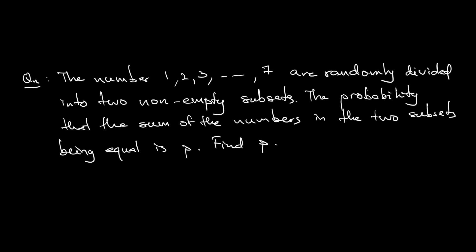This question is a combinatorics question. The numbers 1, 2, 3, all the way until 7 are randomly divided into two non-empty subsets. For example, the first subset is {1, 2} and the second subset is {3, 4, ..., 7}. The probability that the sum of the numbers in the two subsets are equal is P. Find that probability P.